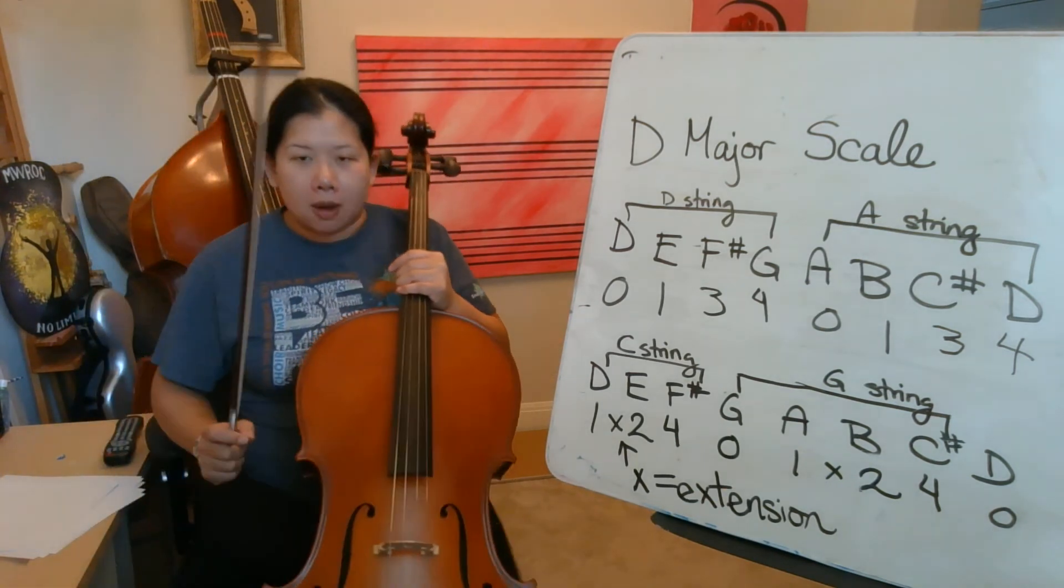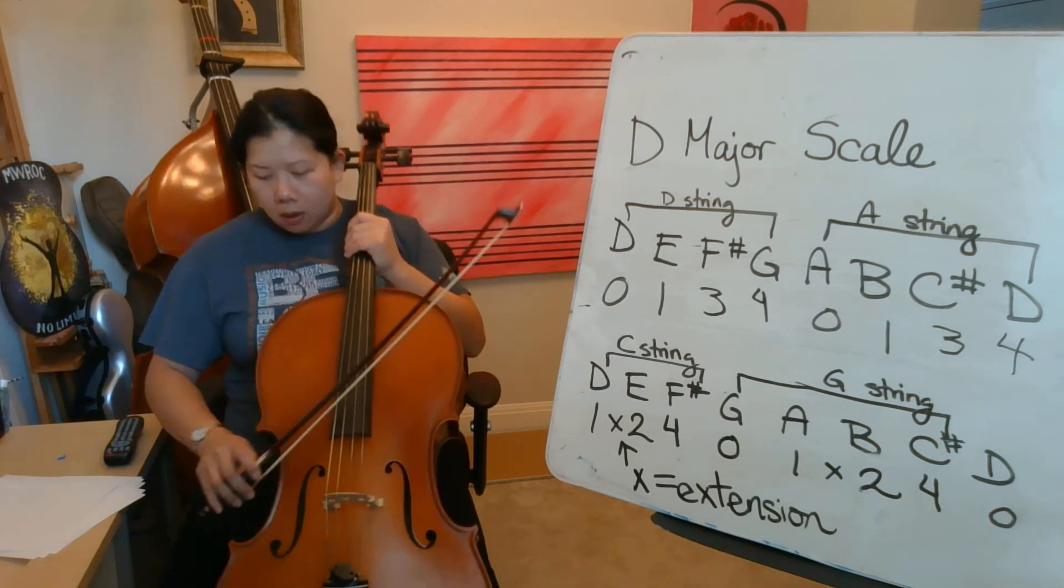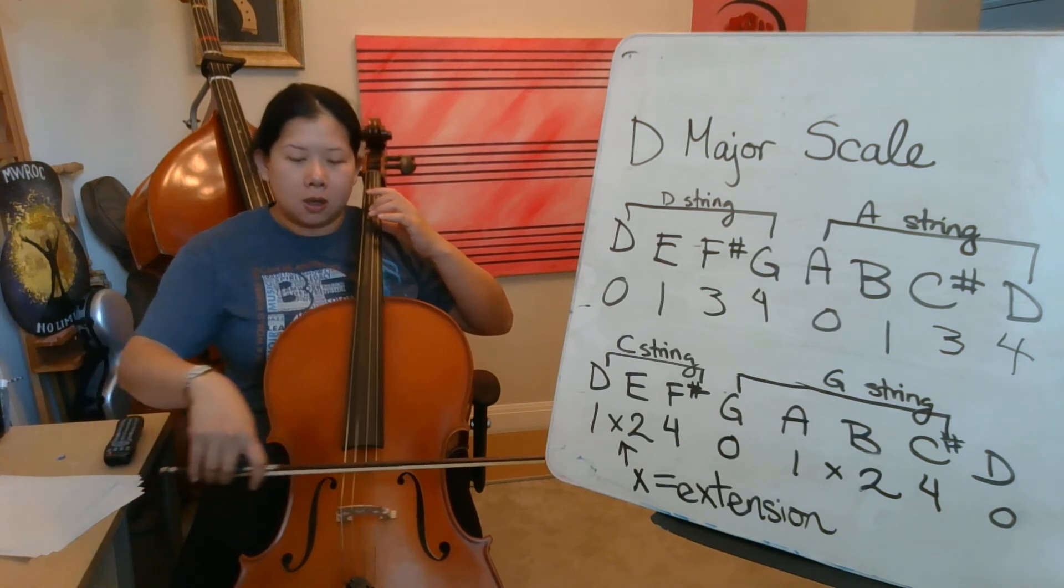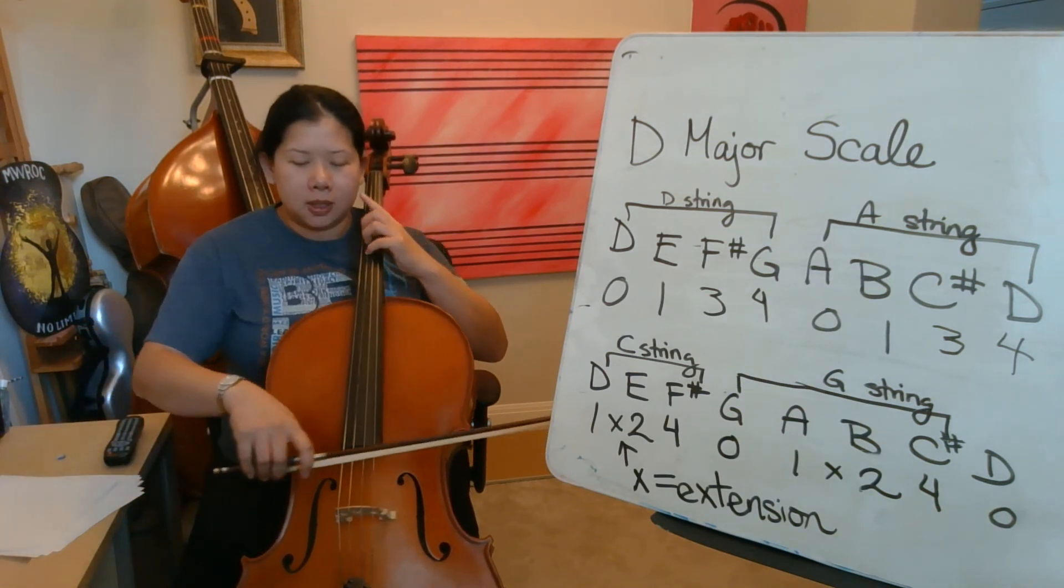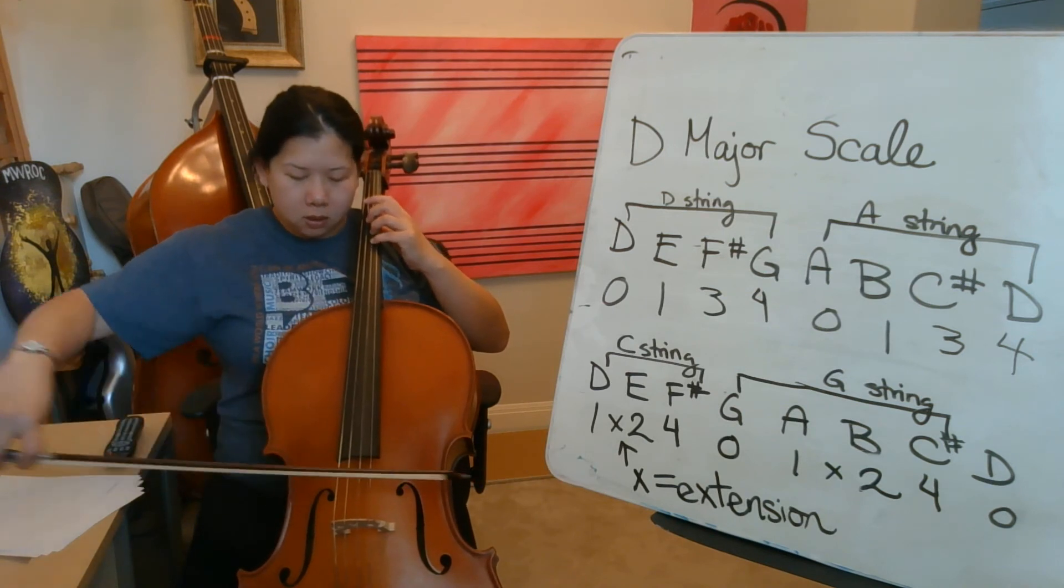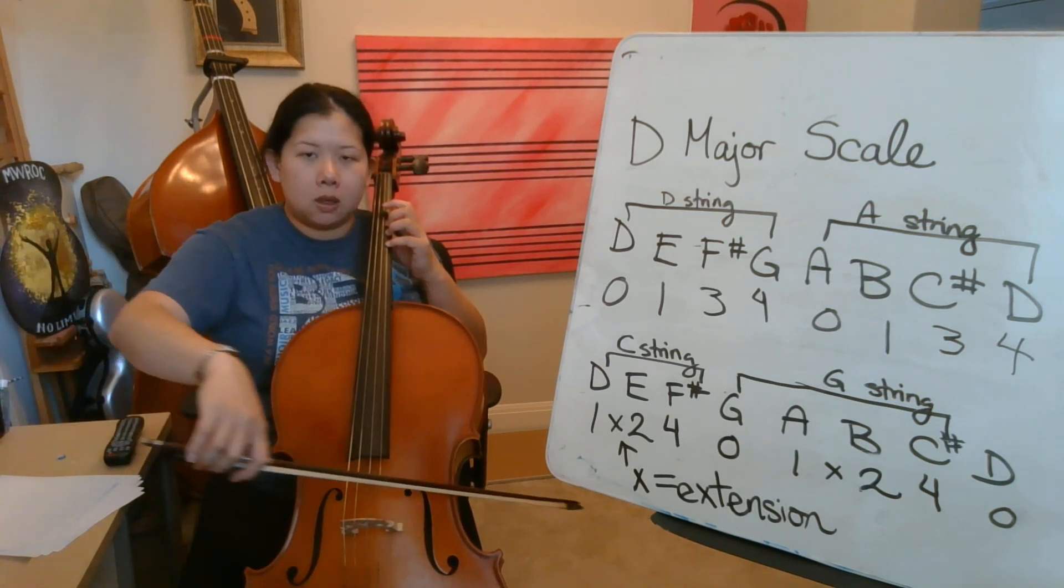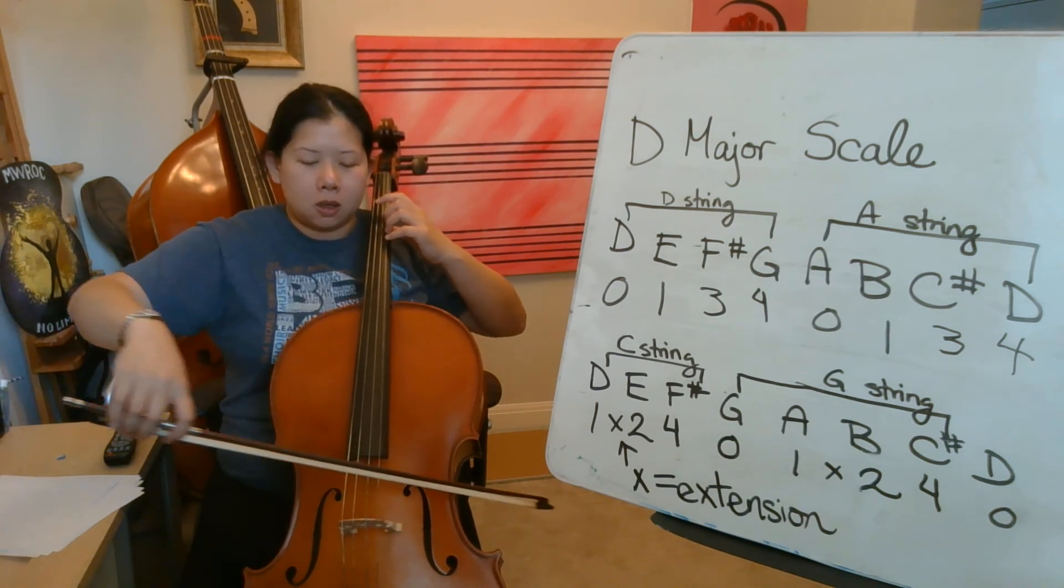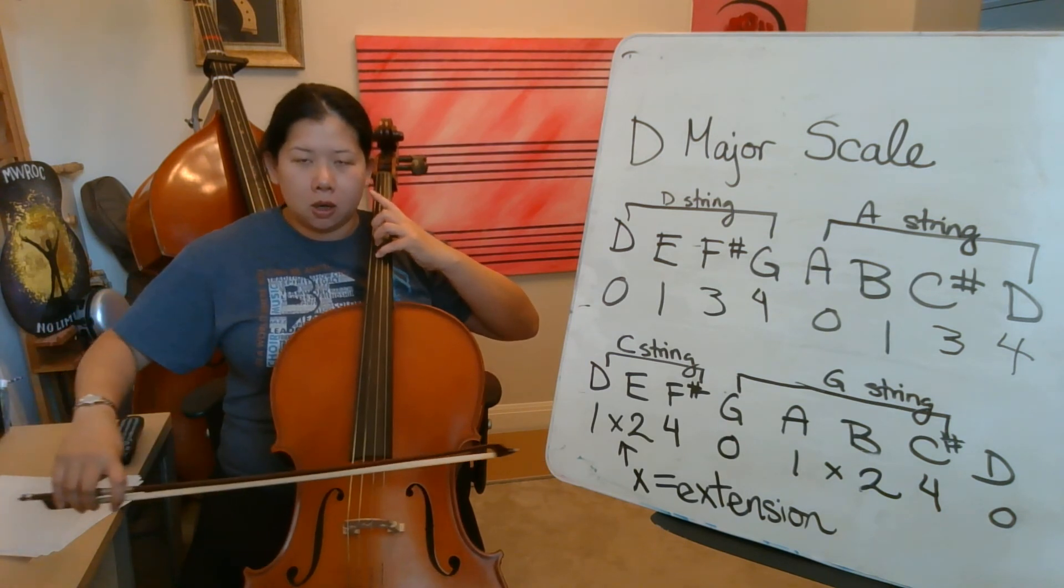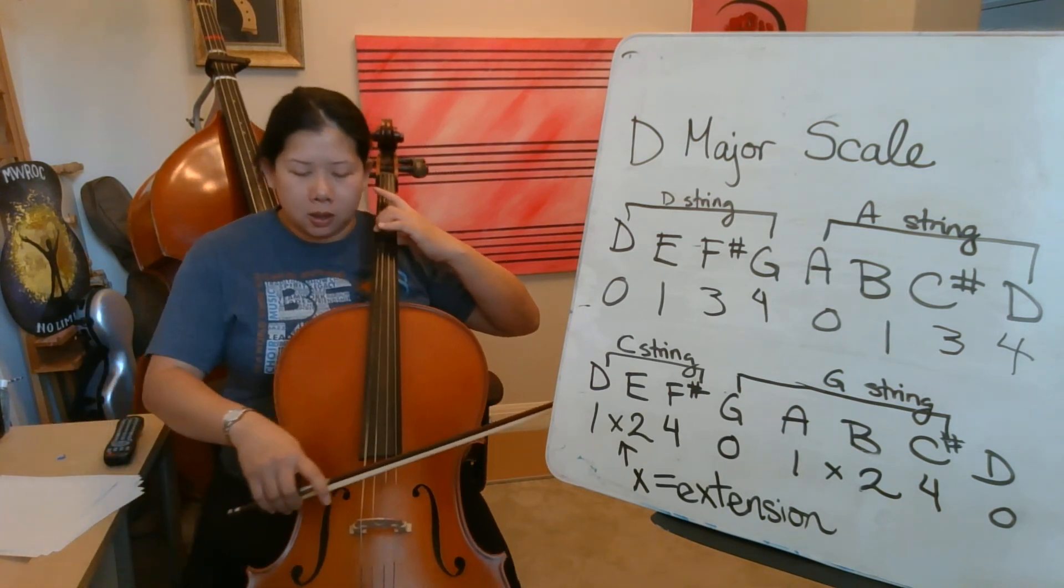Okay, cool, so now we're gonna play the whole thing from C string all the way to the A string. Here we go one two ready go. D, E, F sharp, G, A, B, C sharp, D, E, F sharp. Alright, here we go one more time. A, B, E, F sharp, C sharp, D, D, F sharp, E, F, A, G, E, F sharp, D, C sharp, Y, A, G, F sharp, B, E, F sharp, D, A, F sharp, B, B, E, F sharp, A, F sharp, B, A, F sharp, B, B, A, F sharp, F sharp, E, D.